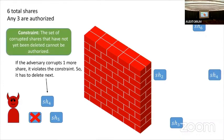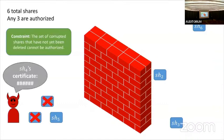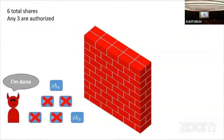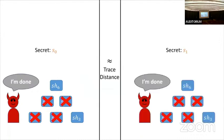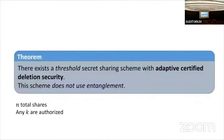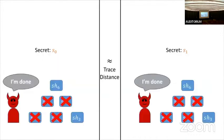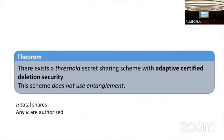In this example, if the adversary controls two non-deleted shares and gets a third, it just learns the secret. So the next step it must take is to delete a share. This experiment keeps going until the adversary eventually gets the opportunity to corrupt every single share. The requirement, similar to the previous case, is that the final view of the adversary is independent of the secret. Our second result is that there exists a threshold secret sharing scheme with adaptive certified deletion security, and as an optimization the shares can be prepared using single qubit operations — no entanglement needed.